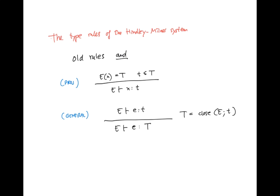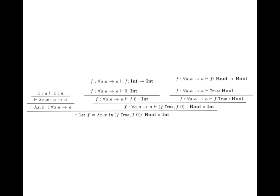With the type rules we had before and the two new ones, we can type the identity function. Here's the derivation tree that assigns the type bool times int to the term let F equal lambda X dot X in F of true comma F of 0. Using the var rule, we conclude that X has type A if we assume X is type A. Then the abstraction rule gives us that lambda X dot X has type A to A. The generalization rule then lets us quantify over all free type variables in A to A not mentioned in the type environment, so lambda X dot X has type for all A, A to A.